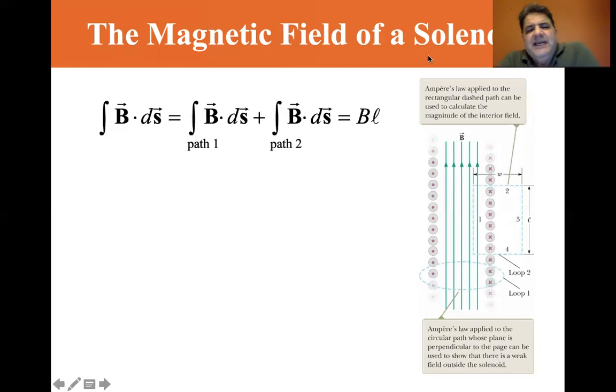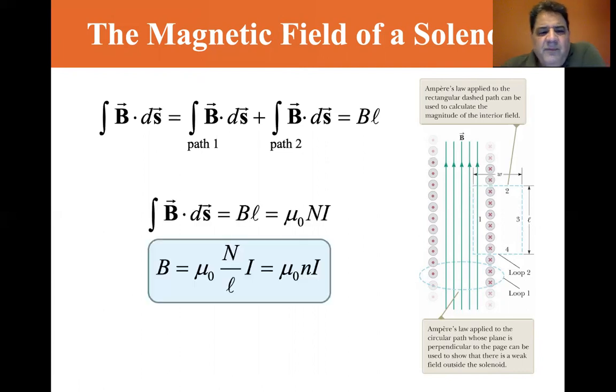So the integral of B dot ds is integral of B dot ds path one plus B dot ds path two equals B times the length. You can see L right there is right next to the three. That's the length of the portion of the solenoid that we're looking at. So the integral of B dot ds is equal to B L, and B L equals mu zero times N times the current, where N is the number of turns in the solenoid.